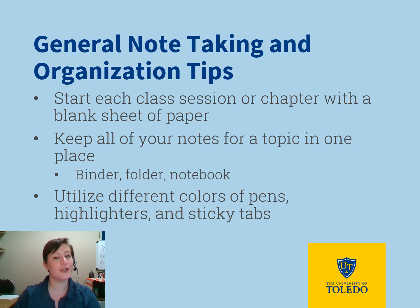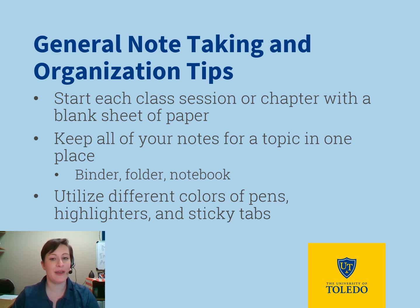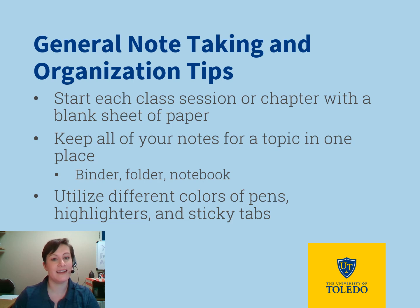First, a few general tips on note-taking and organization. Start each class session, chapter, or section with a blank sheet of paper so you have plenty of space to take down information. The type of paper used is up to your personal preference, but I encourage you to use something that can be removed and reorganized when needed. Consider some loose-leaf paper, blank print paper, or a spiral notebook with perforated pages. Then keep all of your notes for one topic in the same place, such as a binder or folder, so you can easily locate information.